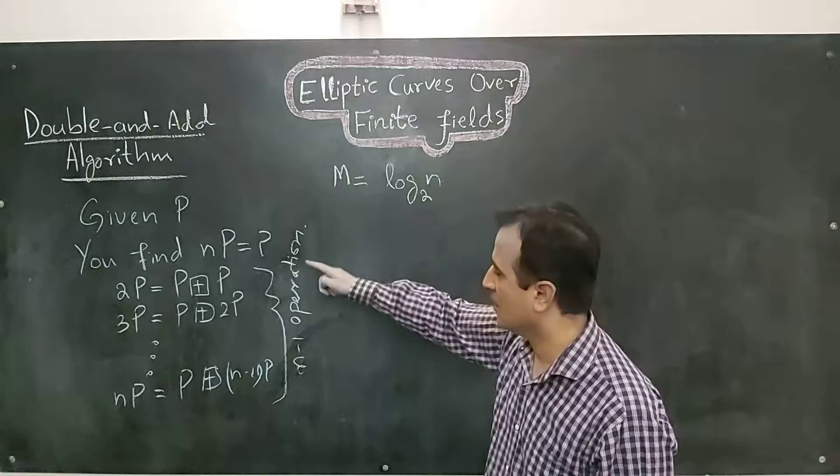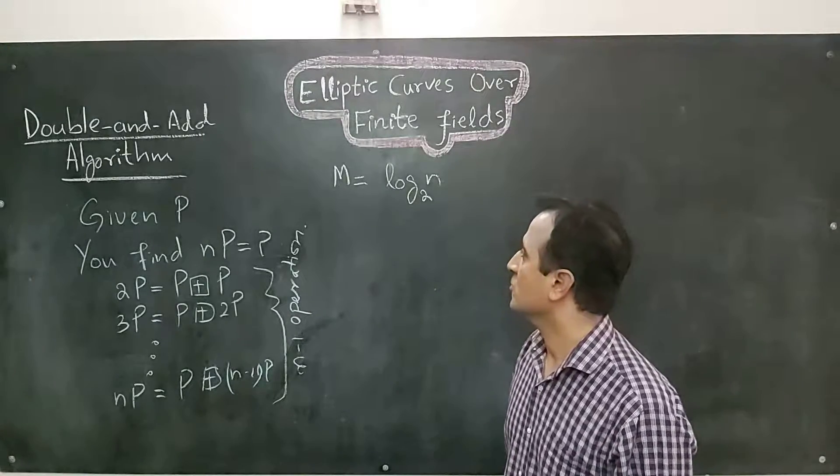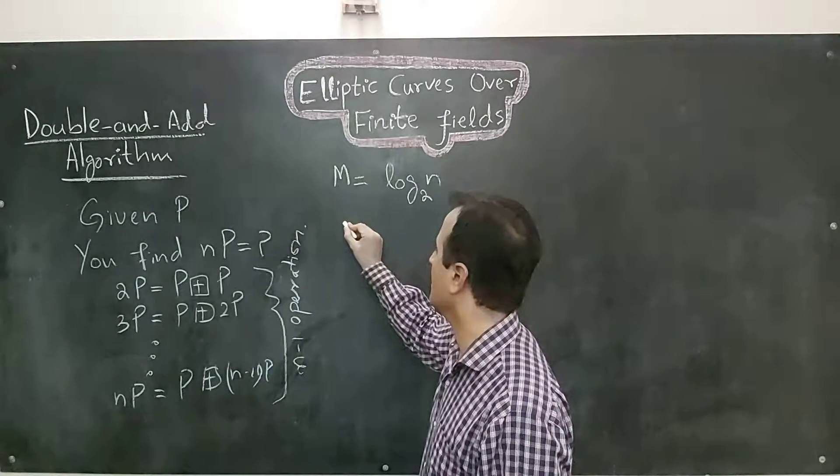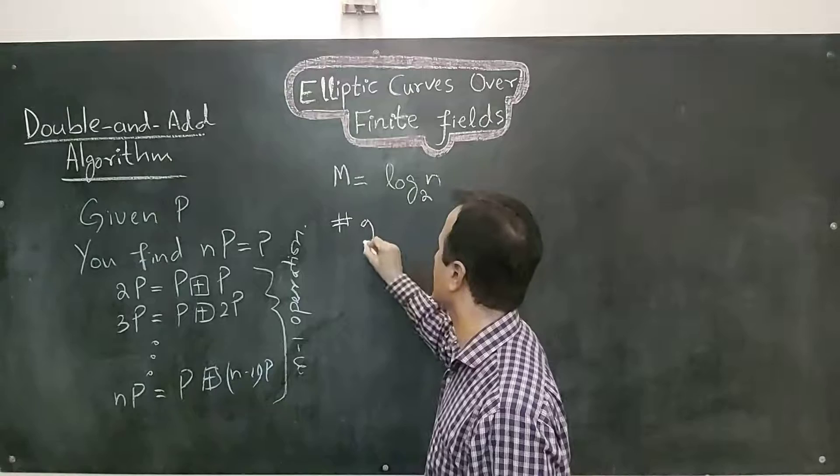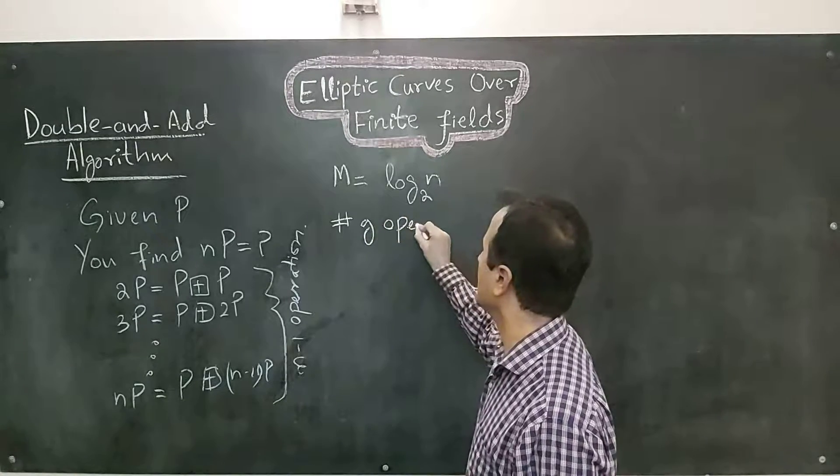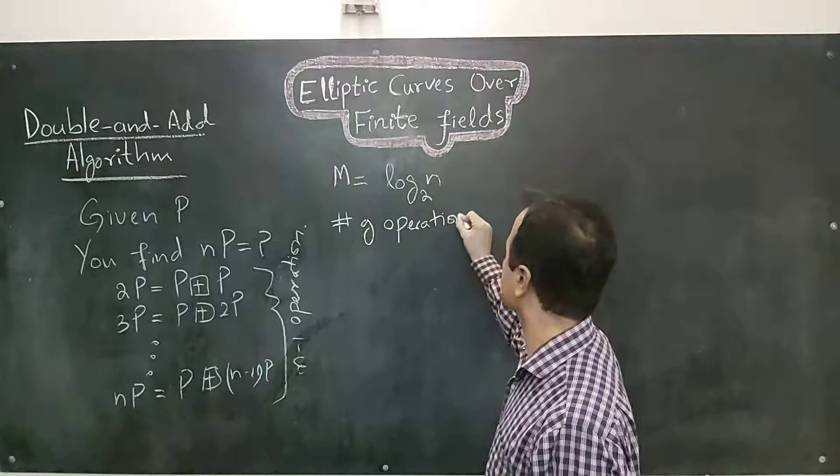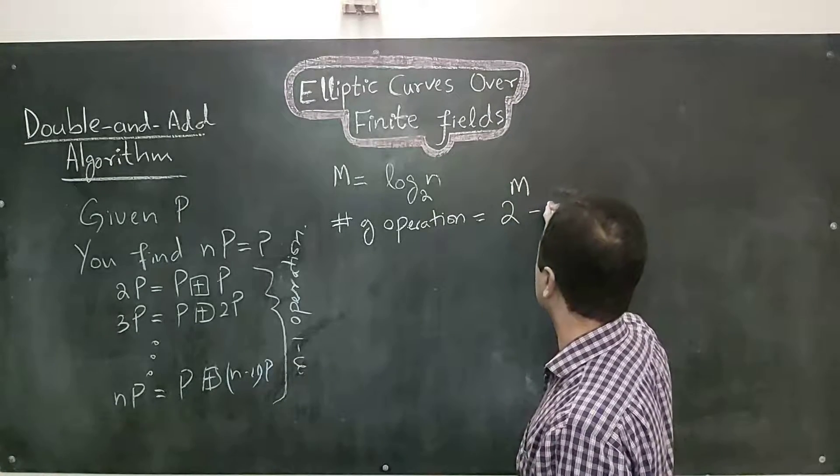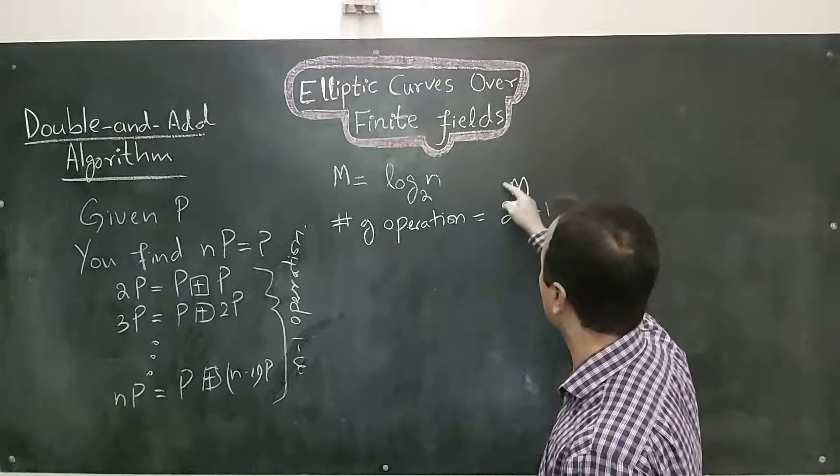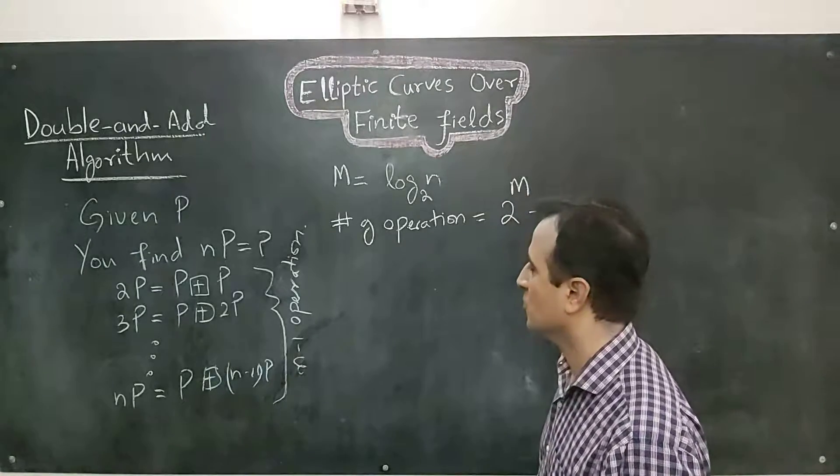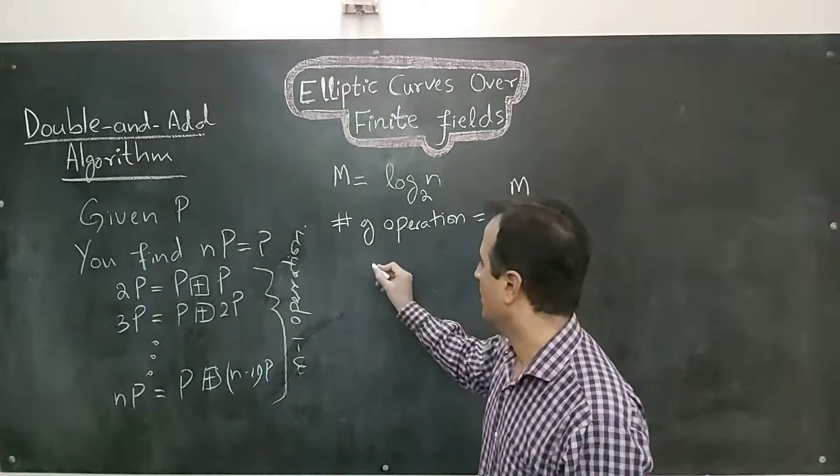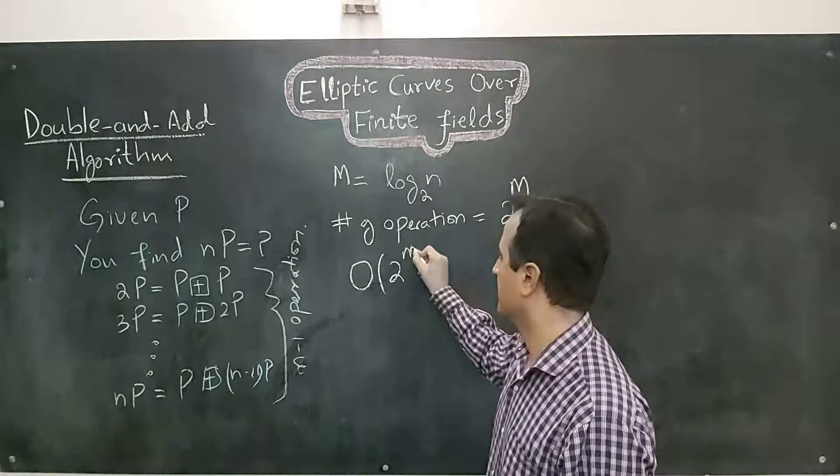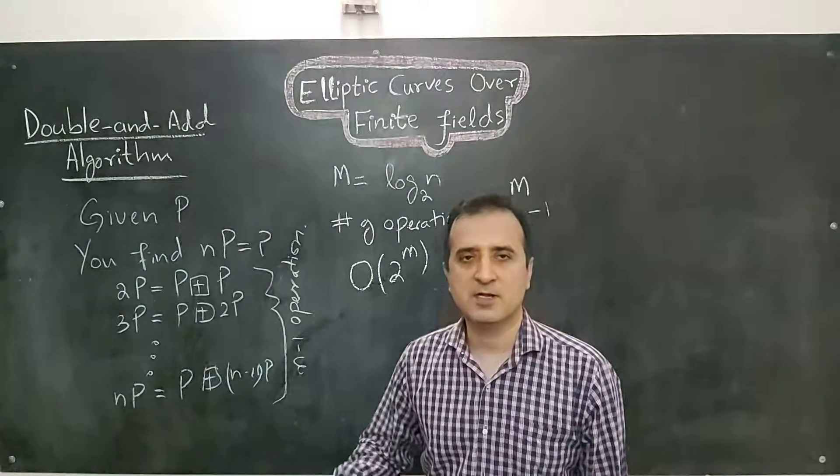We know the number of operations are n minus 1. So in terms of M, we can write that number of operations are 2 raised to power M minus 1. And if you compute this, it will be n minus 1. So in terms of O, the time complexity is 2 raised to power M, and this is an exponential time complexity.